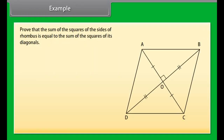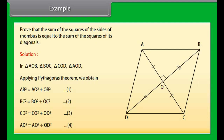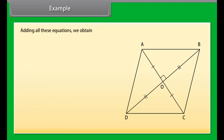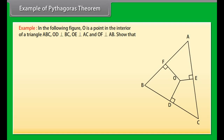Example: Prove that the sum of the squares of the sides of a rhombus is equal to the sum of the squares of its diagonals. Solution: In triangles AOB, BOC, COD, and AOD, applying the Pythagoras theorem, we obtain the relevant values. By adding all these equations, we obtain AB² plus BC² plus CD² plus AD² equals AC² plus BD².